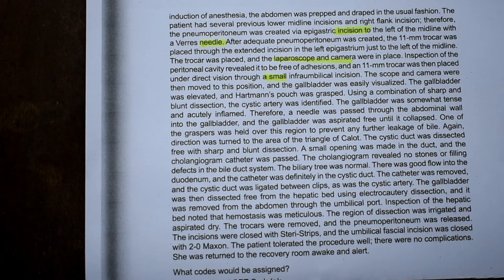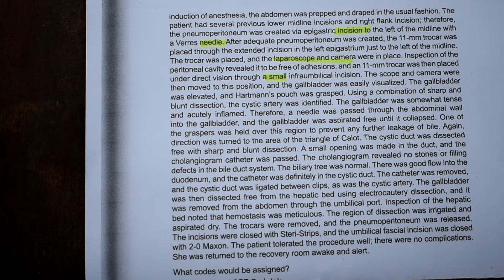The gallbladder was elevated and Hartmann's pouch was grasped. Using a combination of sharp and blunt dissection the cystic artery was identified. The gallbladder was somewhat tense and actually inflamed, therefore a needle was passed through the abdominal wall into the gallbladder and the gallbladder was aspirated free until it collapsed. Now at this point, since they are doing a different entry — a percutaneous entry through the abdomen to the gallbladder and draining it — I don't know if we're going to consider that a separate procedure code or if that's going to be integral to this procedure. We will see.